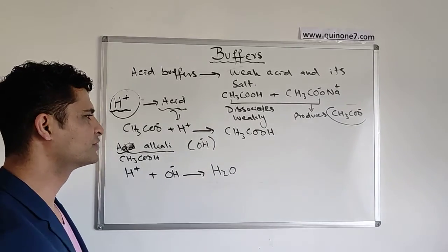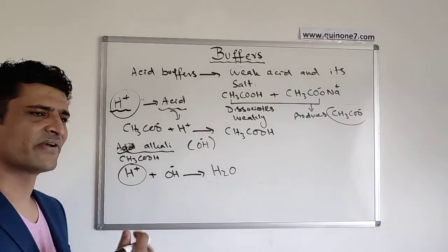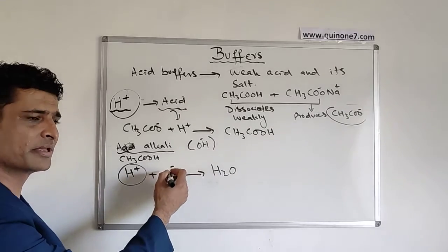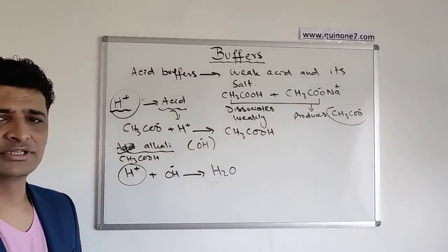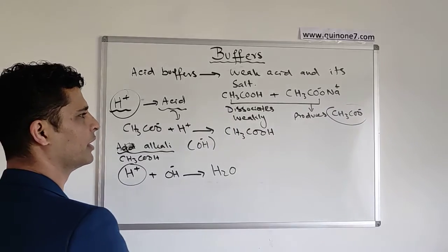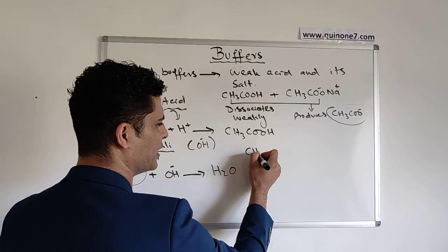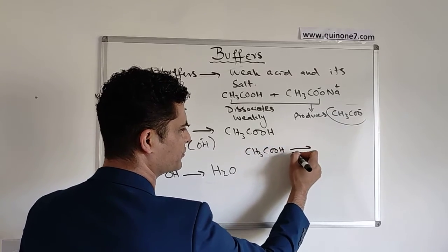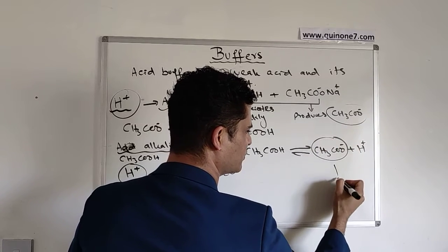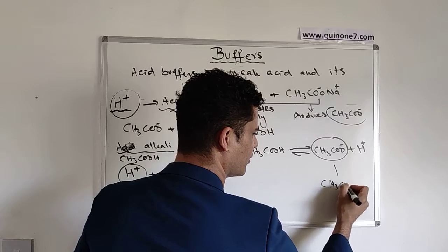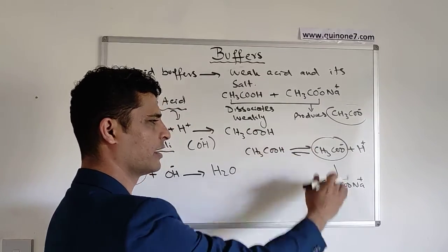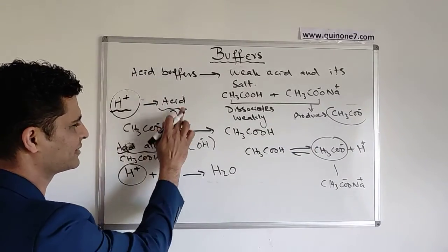That's why we say buffers do not completely remove the effect on the pH — they only minimize or reduce it. pH is essentially the effect of H⁺ ions in the solution. When extra H⁺ ions come in, the buffer tackles them and produces water, like a neutralization reaction. Based on this, the reaction: CH₃COOH dissociates to produce CH₃COO⁻ and H⁺, and H⁺ can also be produced from the sodium acetate salt, which produces the ethanoate ion.